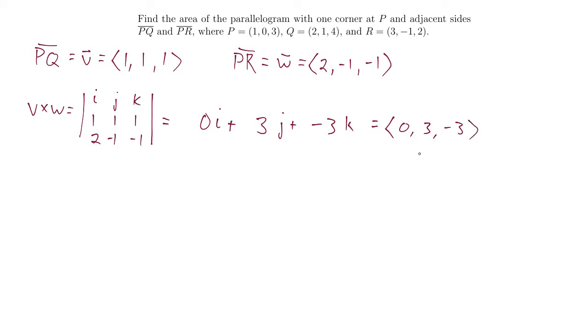But that's not the area of a parallelogram, that's a vector. The area is going to be the magnitude of that vector. The area will be the magnitude of V cross W, which is the square root of 0 squared plus 3 squared plus negative 3 squared.